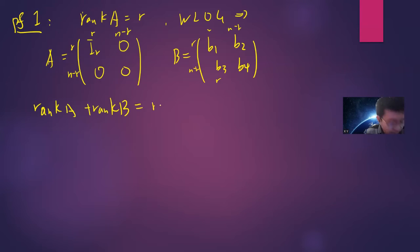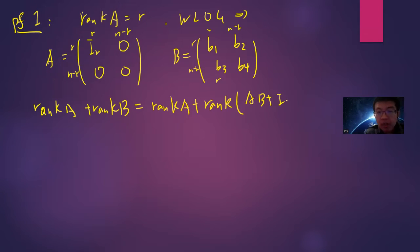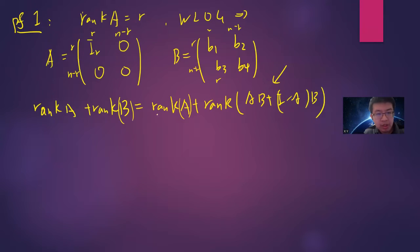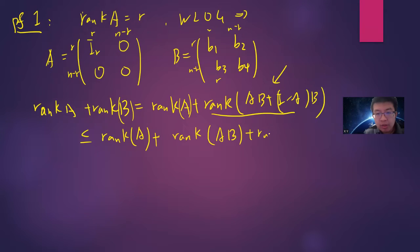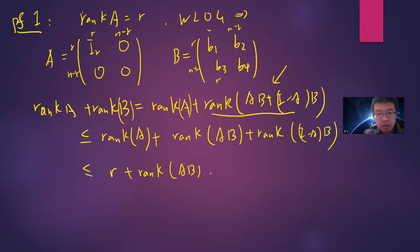So rank(A) + rank(B) equals rank(A) + rank(AB + (I − A)B). Using the trivial inequality, this is less than or equal to rank(AB) + rank((I − A)B).